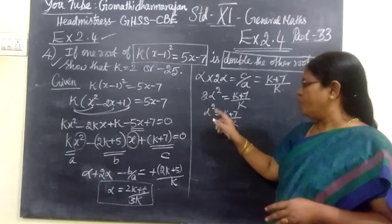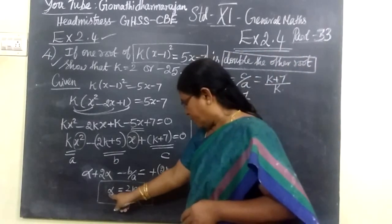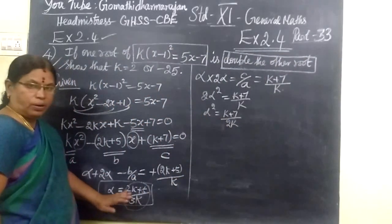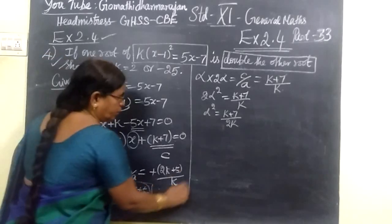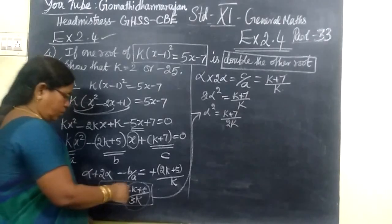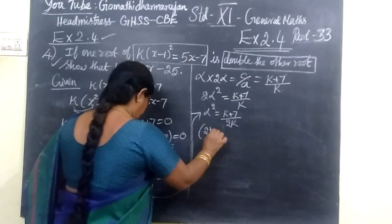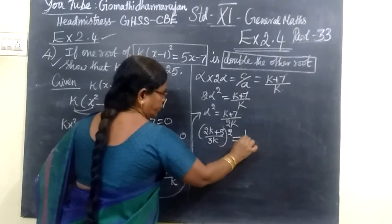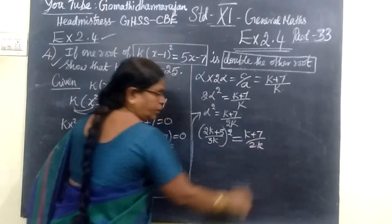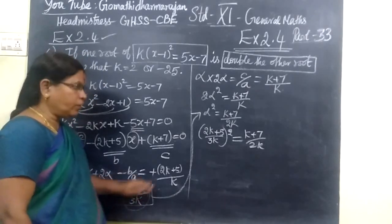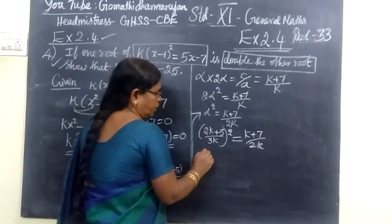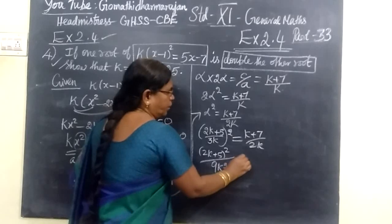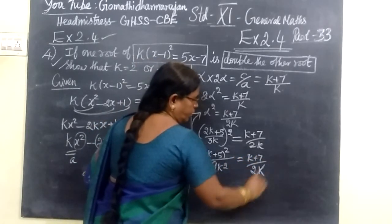So you know the value of alpha squared. The alpha value is here — substitute it. So you know the value of alpha: instead of alpha you are writing (2k plus 5) by 3k. So the whole square equals (k plus 7) by 2k. So (2k plus 5) whole squared by 9k squared equals (k plus 7) by 2k.